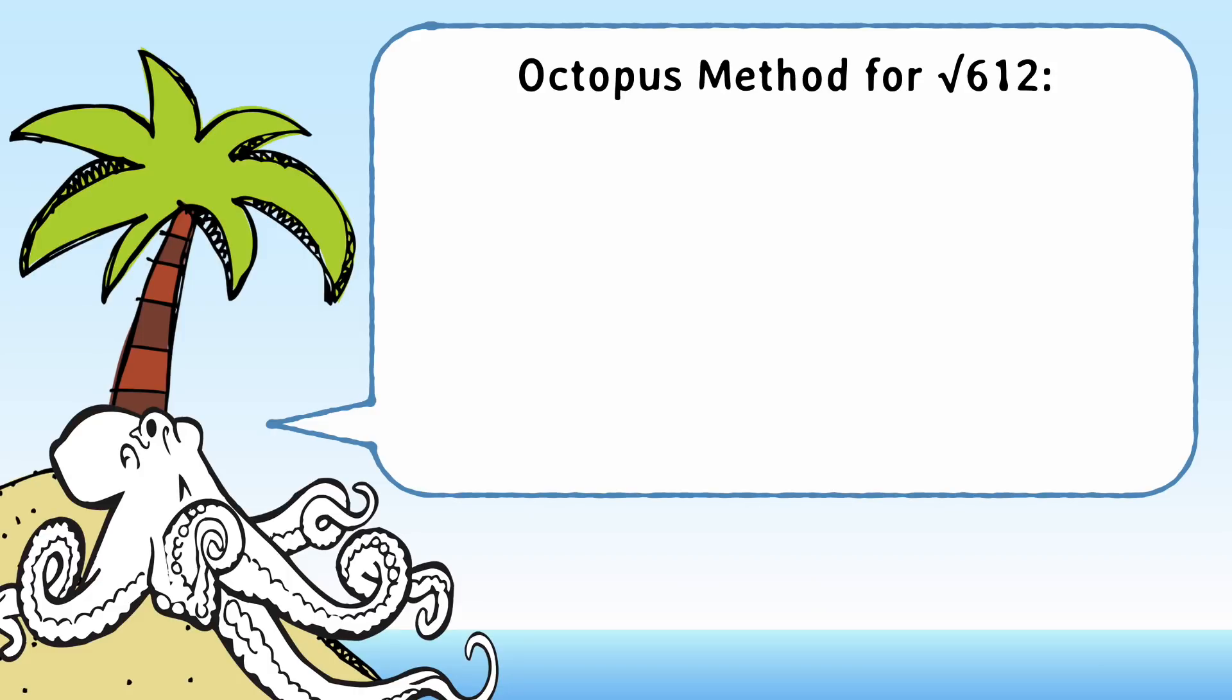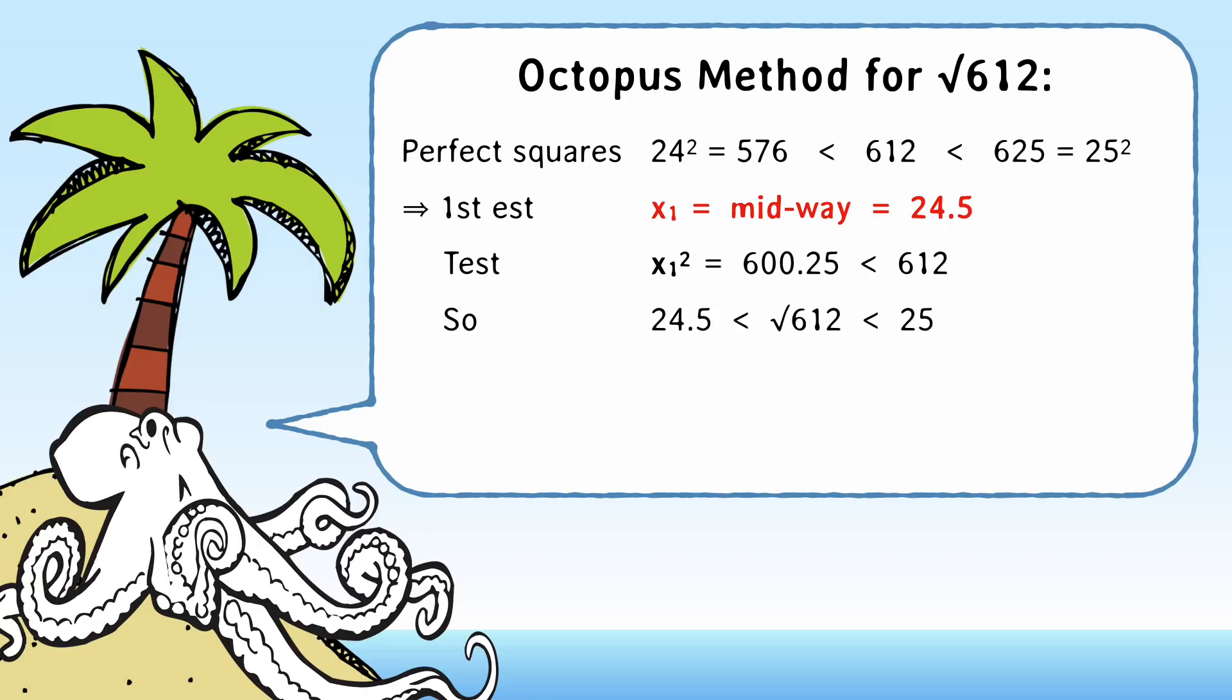Okay, so if you actually did that exercise, you'll note that the closest perfect squares to 612 are 24 squared, which is 576, and 25 squared, which is 625. So the square root of 612 is between 24 and 25. So, split the difference. The new estimate is 24.5. Now, 24.5 squared is 600.25, which is lower than 612.